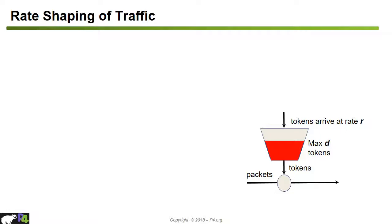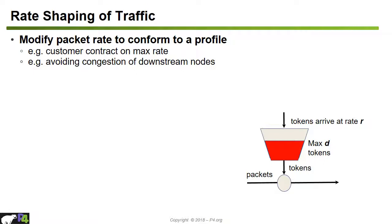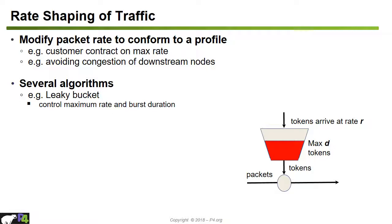Another data plane operation is traffic shaping — modifying the packet rate to conform to a given profile. For example, if a customer has a contract for 10 Mbps but sends more, the switch runs a rate shaping algorithm to check the arrival rate and mark conforming packets with a given type-of-service field in the IP header, while marking out-of-profile packets differently. This rate shaping can be used to avoid congestion on downstream nodes. The Leaky Bucket algorithm controls the maximum rate and burst duration for each flow: tokens are generated at rate R, the bucket has depth D, and a packet is forwarded only if tokens are available.